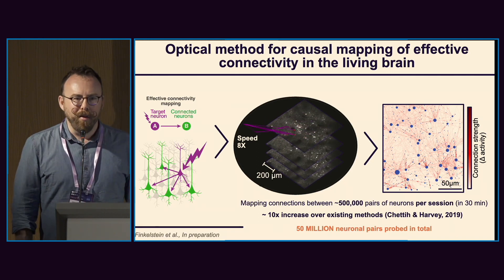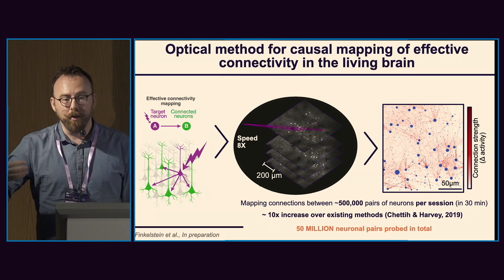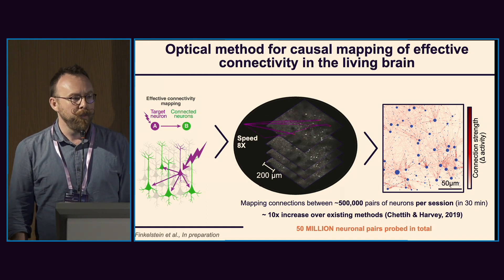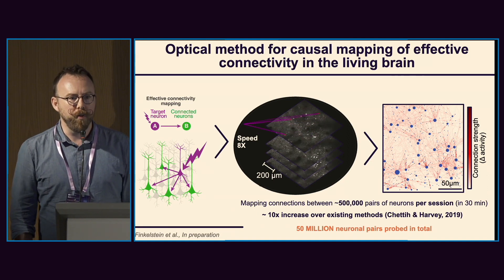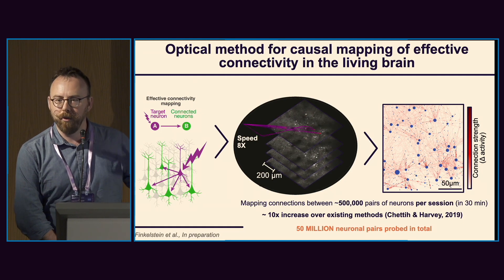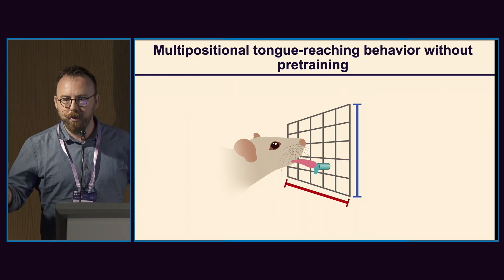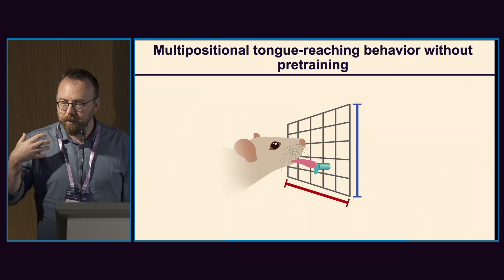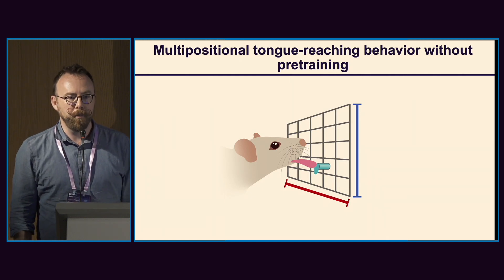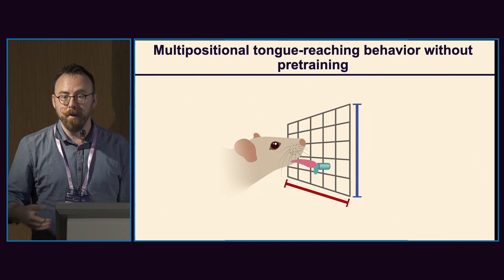The problem with studying the motor cortex is that it requires active behaviors and a task to infer functional properties. As Pablo Blinder mentioned yesterday, many tasks in rodents require many trials to train the animal, and tasks requiring short-term memory in perceptual decision-making can require many weeks of training, which would alter brain connectivity. So instead we wanted a simple task where the animal would perform sufficiently interesting behaviors without training. We came up with a very intuitive task in which the animal simply needs to grab with its tongue to reach for a water reward positioned in different places around the mouse face. The mice do it very intuitively and don't need any pre-training — they do it from the very first day.